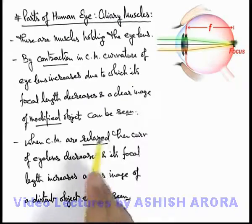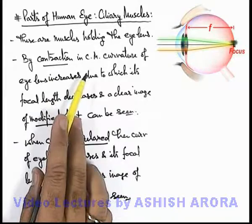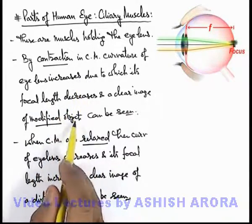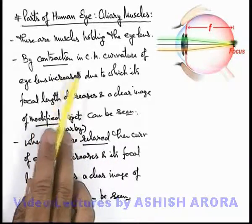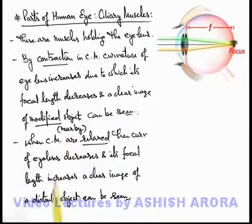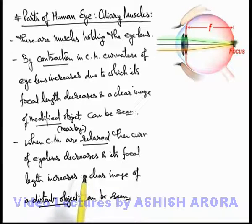For nearby objects, the images are formed due to contraction in ciliary muscles, and the image of such nearby objects can be seen by contraction in ciliary muscles. When we look at distant objects located far away from the eye, in the relaxed state of ciliary muscles we can see a clear image. You might be aware that when you wish to see the clear image of a very close-by object, you need to strain your eyes.